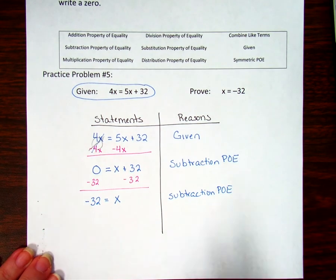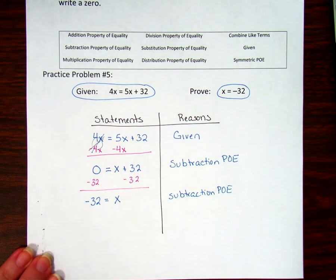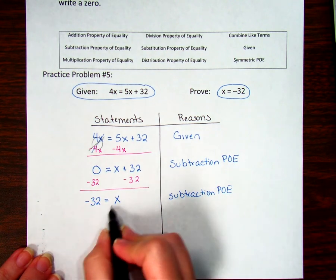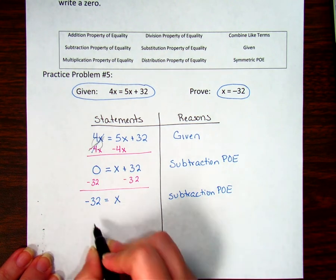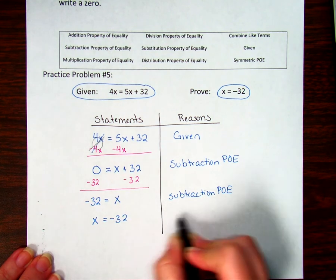Now here's my problem. I wasn't trying to prove that negative 32 equals X. I want X equals negative 32. So I just have to switch these around. If negative 32 equals X, that means X equals negative 32.